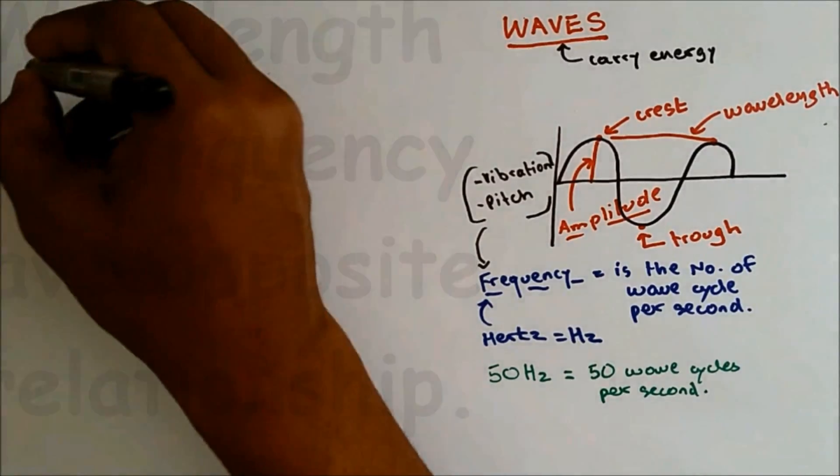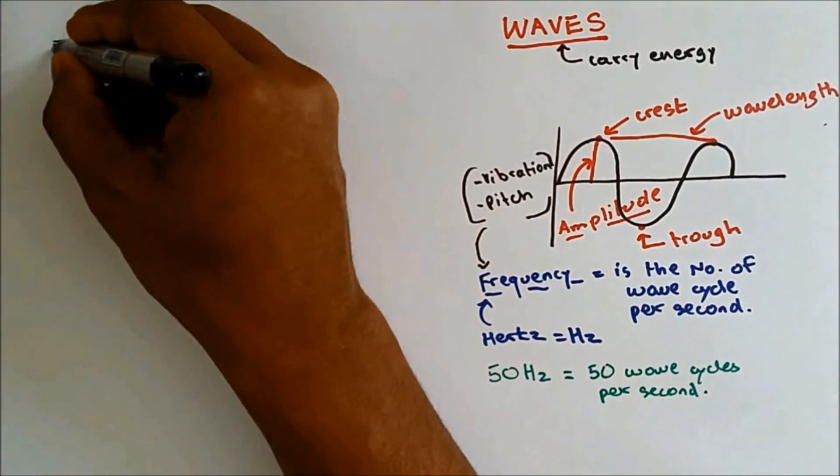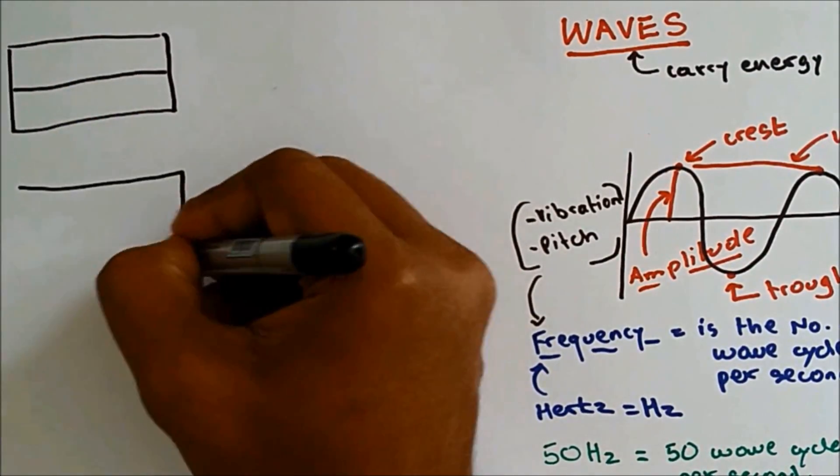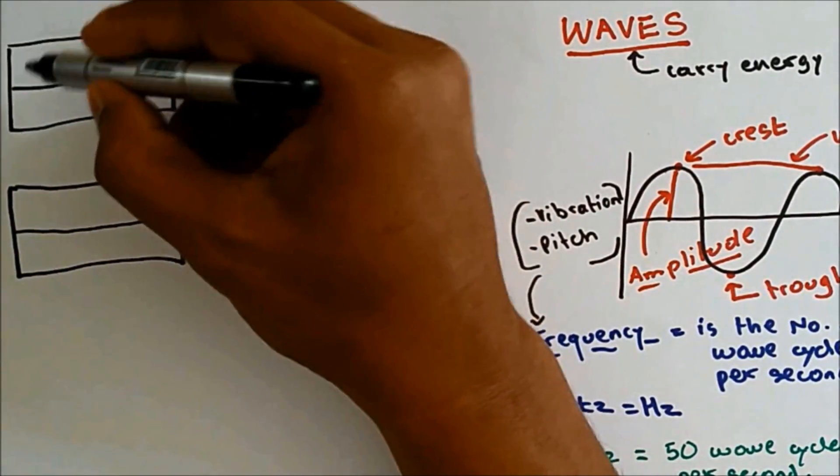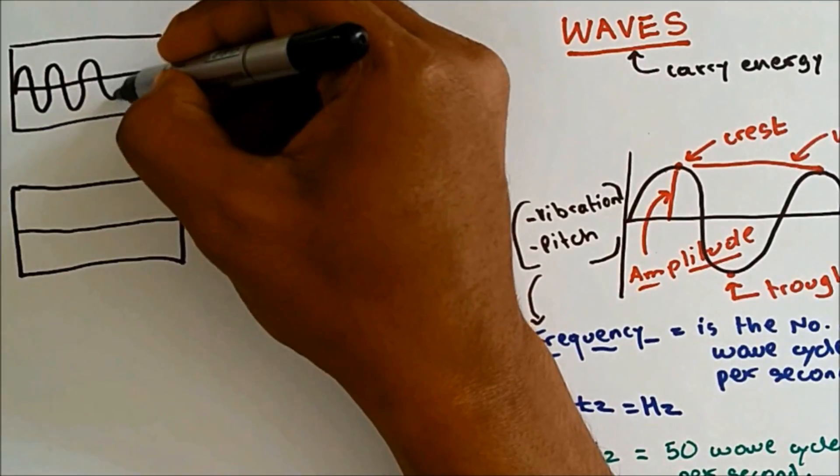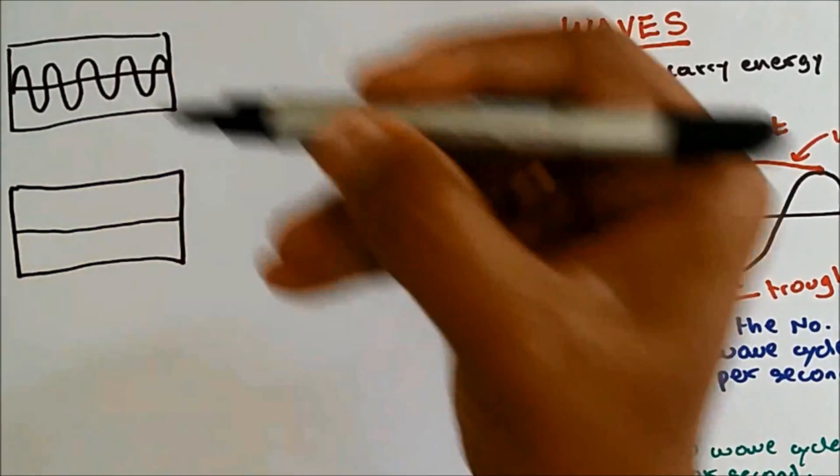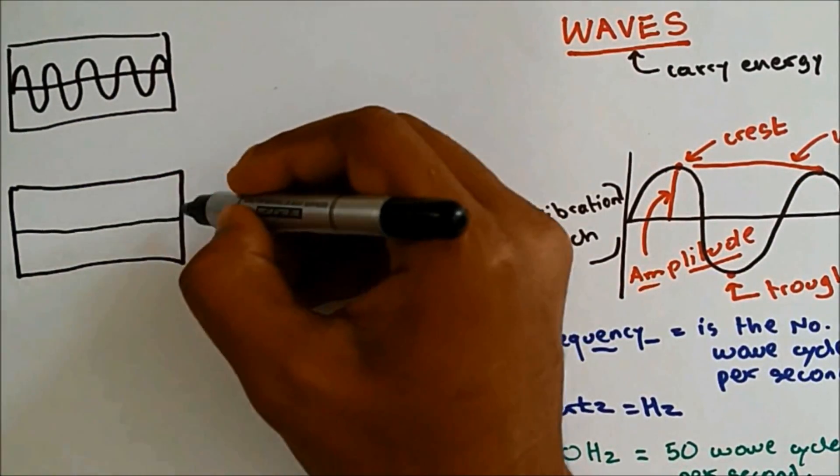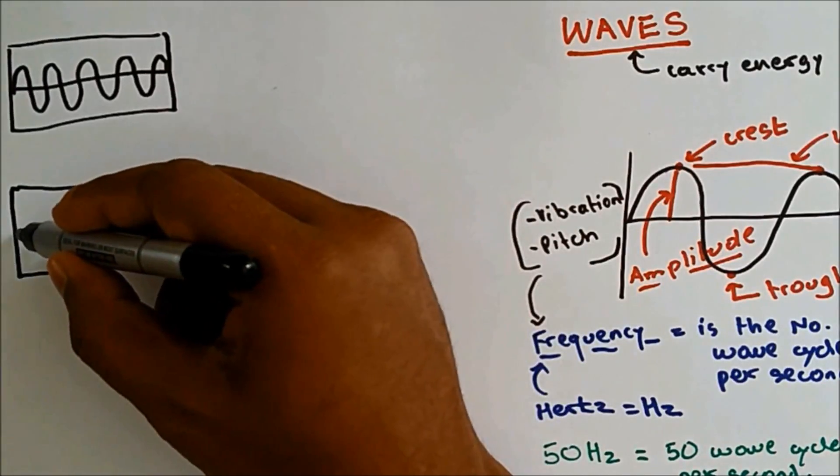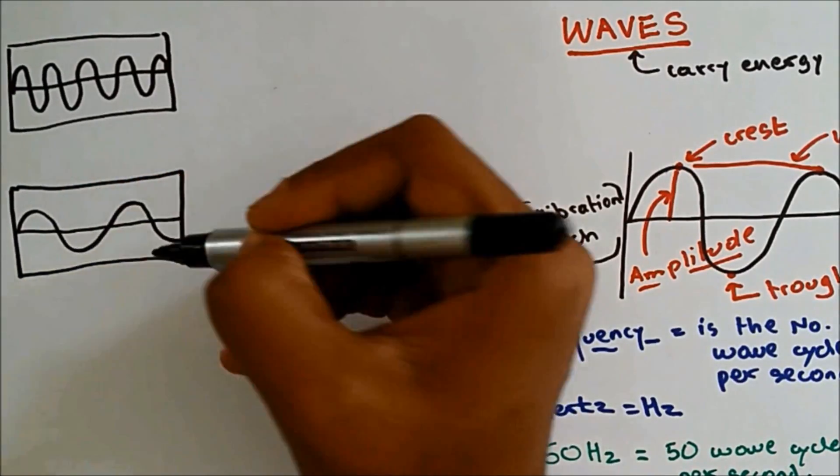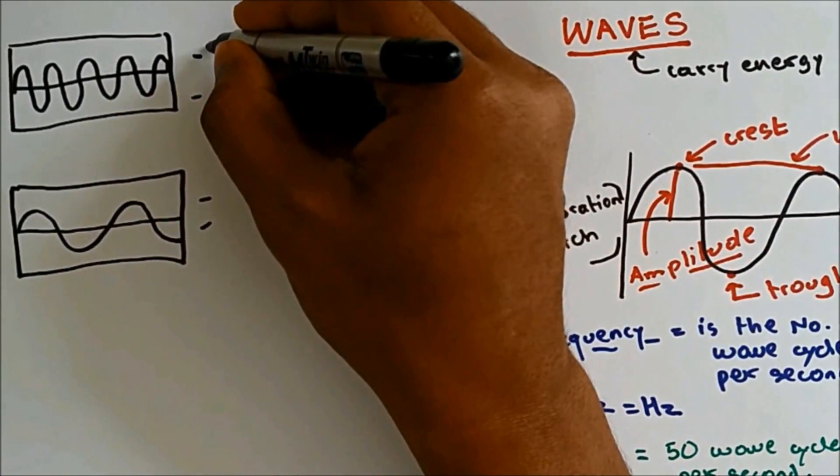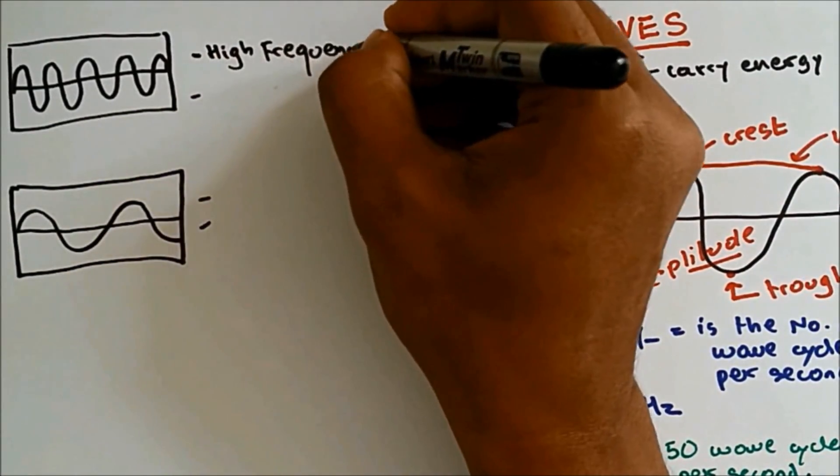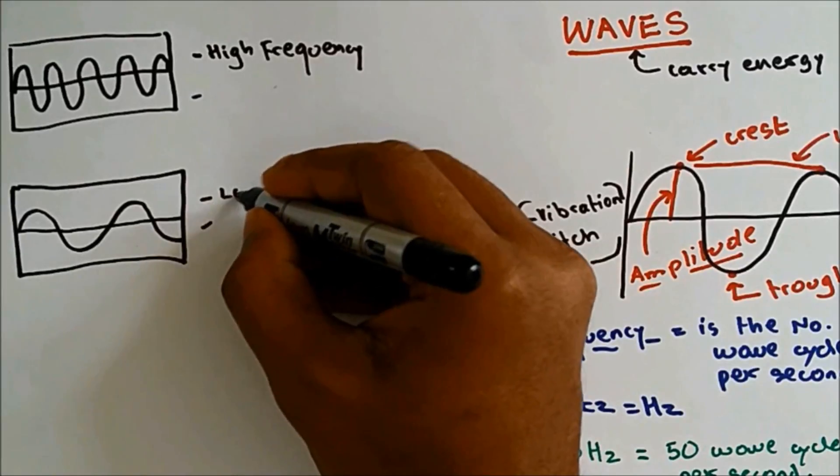Let me show you this with the diagram. In this box I'm going to draw high frequency. High frequency means lots of waves. And over here I'm going to draw low frequency, which means less number of waves.